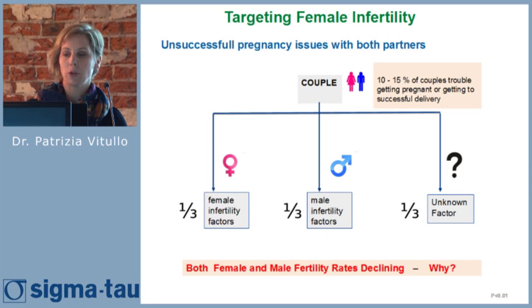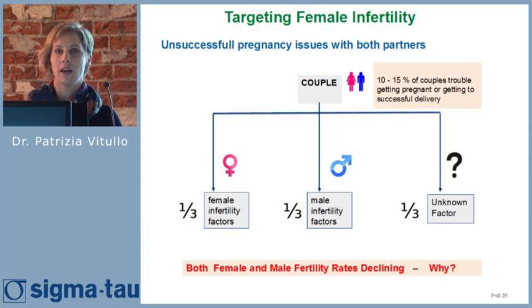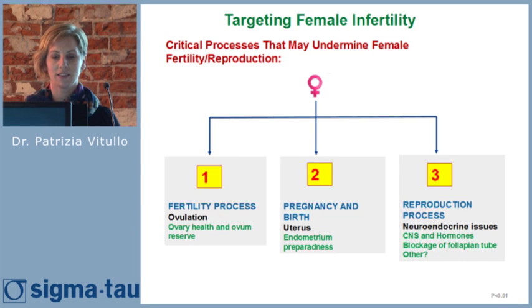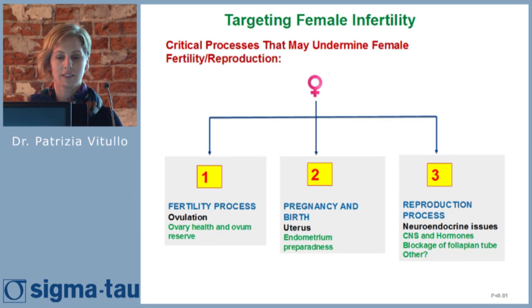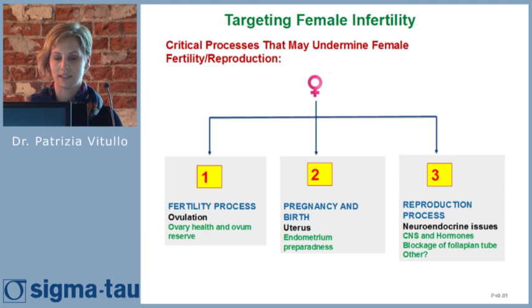In the last decades the incidence of infertility is growing. 10 to 15 percent of couples have problems conceiving, and the rate of abortion is growing as well. Targeting female infertility, we can target different processes like fertility, pregnancy, and reproduction, which involve different structures in the body like the ovary, uterus, and also the central nervous system.